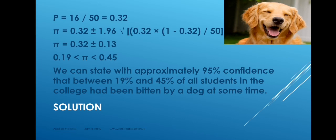Then we substitute into the formula: pi equals 0.32 plus or minus 1.96 times the square root of 0.32 times (1 minus 0.32) over 50. Working out everything on the right-hand side of the plus-minus sign gives us 0.13 — that's the margin of error. So the point estimate is 32% with a margin of error of 13%. Applying the minus sign gives 19% or 0.19, and applying the plus sign gives 45% or 0.45.